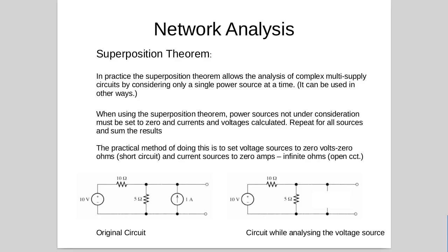In this one we use a thing called source zeroing. So at the bottom here's our original circuit and on the right we've zeroed one of the sources. Now with a current source we zero it by removing it. With a voltage source we zero it by replacing it with a short.